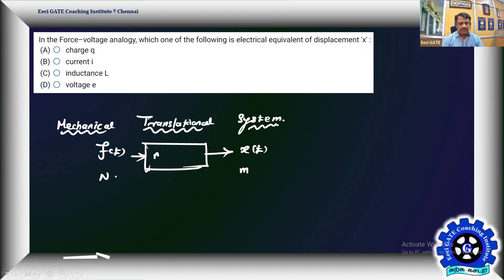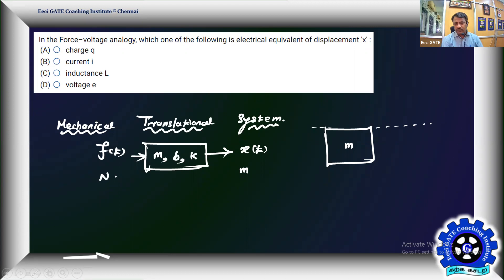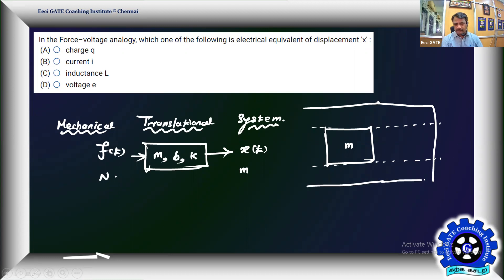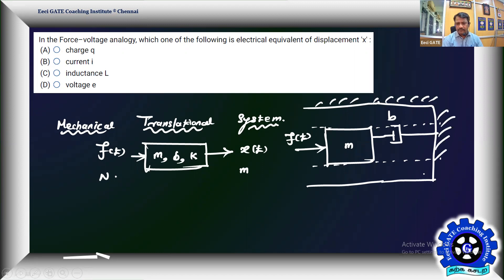Inside the mechanical translational system, we have the functions of mass, a dashpot or friction element, and a spring. The detail view shows a mass M suspended between two rails or tracks in a casing. There is a friction element B that opposes the movement of the mass when it experiences a pushing force. To oppose the movement of the mass, we also have a spring K.